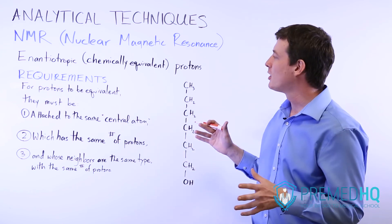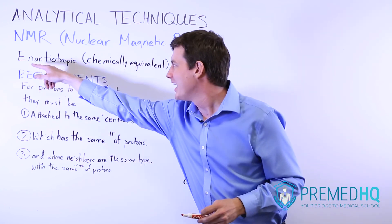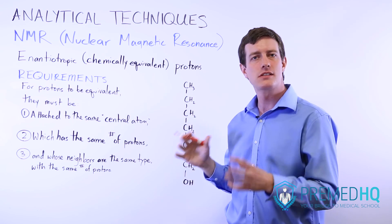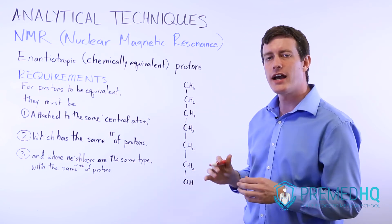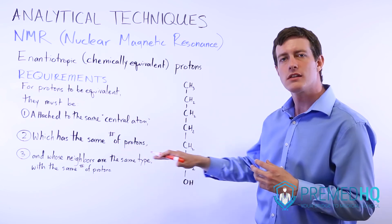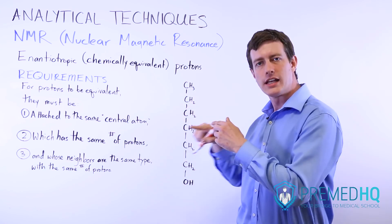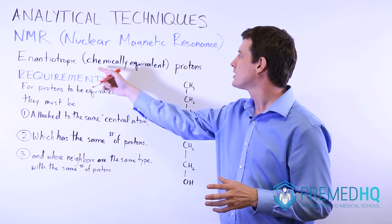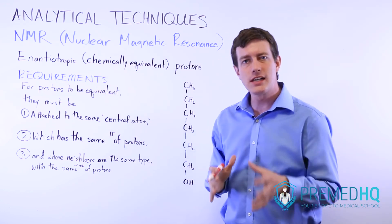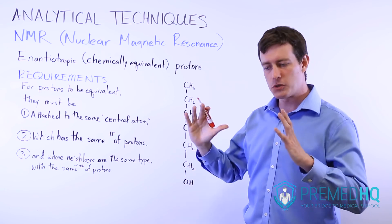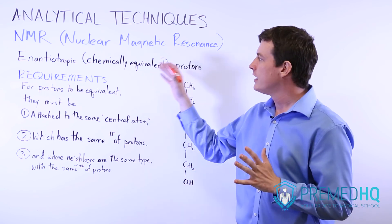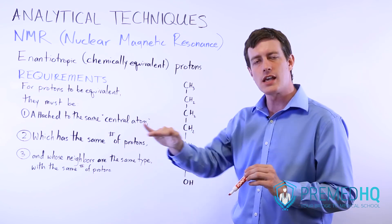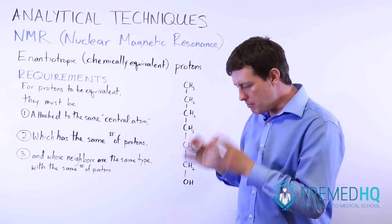An understanding of proton NMR really requires an understanding of what it means to have an enantiotopic or chemically equivalent proton. Essentially what that means is that they're in a very similar proton environment, and because of that they're going to have very similar qualities in terms of how strong the magnetic field needs to be for the laser to flip them from one spin to the other. So if two protons are considered chemically equivalent or enantiotopic, they will behave very similarly and show up in the same group on NMR, because they are at chemically equivalent positions.